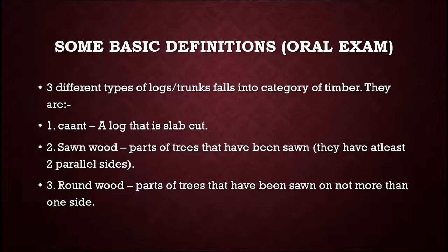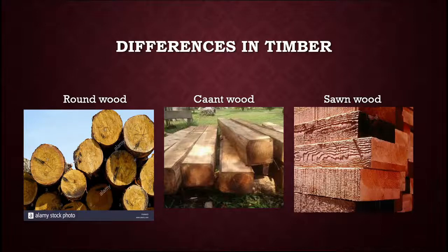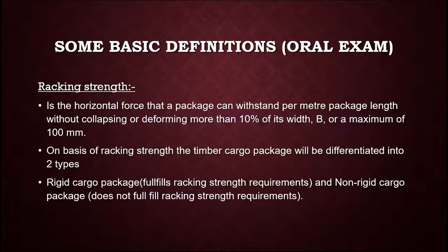The types of timber include sawn wood, which are parts of trees that have been sawn — meaning cutting of the excess part of the wood. Round wood refers to parts of trees that have been sawn on not more than one side, meaning round wood has only a single flat surface or none. Here is a diagrammatic representation of the different types of wood that fall into the category of timber.